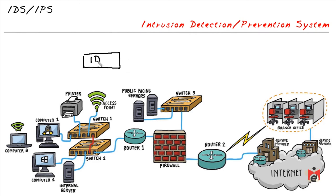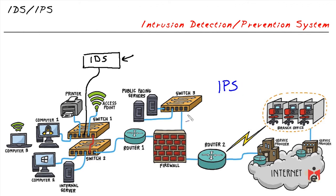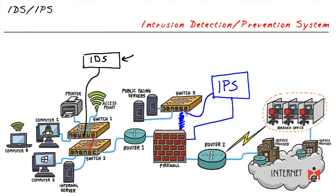To monitor internal company traffic, we can connect an IDS appliance to the network and copy (mirror) packets to its port on the switch, so the IDS can analyze traffic from specific ports or VLANs. However, because it's only receiving copies of data — not sitting inline between source and destination — the IDS cannot stop an attack on its own. For an IPS, we modify the topology: one interface connects to the firewall and the other to the switch, so all traffic to public servers passes through the IPS.